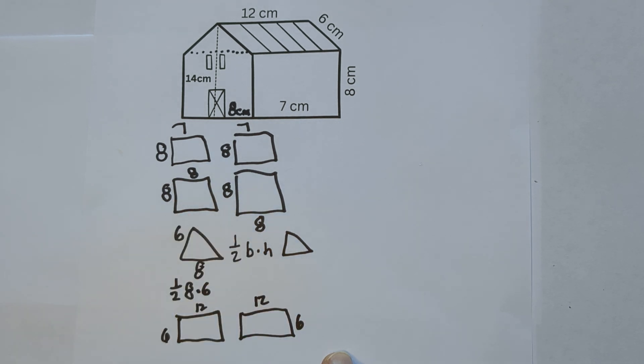Okay, so now all we do is start multiplying and getting the area of each of these shapes and adding them up.